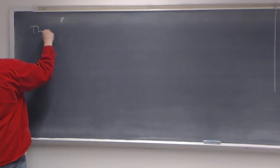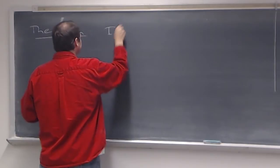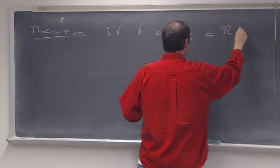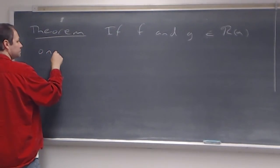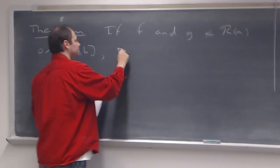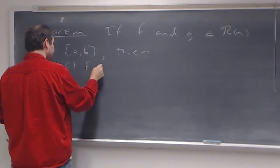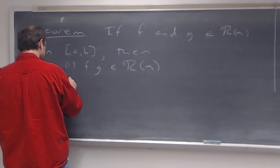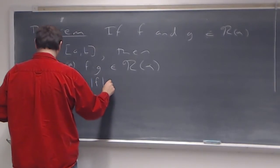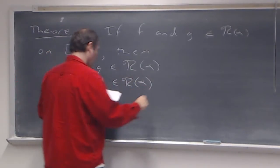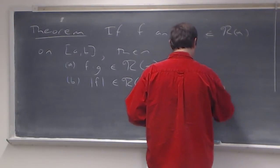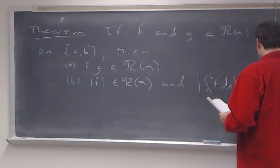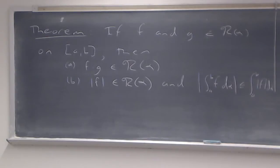I'd like to start off with a theorem. It says: if f and g are both elements of Riemann-Stieltjes integrable functions with respect to alpha on [a,b], then (1) f times g is an element of Riemann-Stieltjes integrable functions with respect to alpha, and (2) the absolute value of f will be Riemann-Stieltjes integrable, and the absolute value of the integral of f dα is less than or equal to the integral of the absolute value of f dα. That's what we have — we want to prove this.